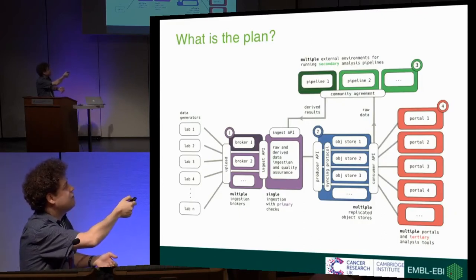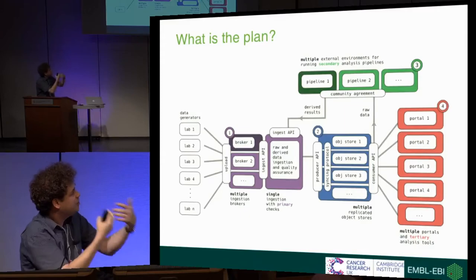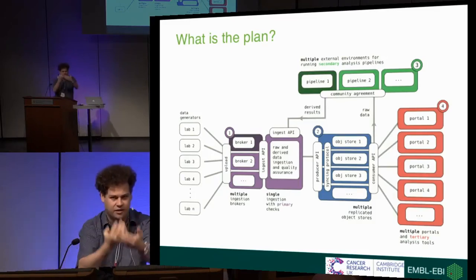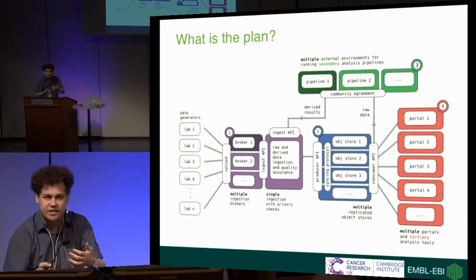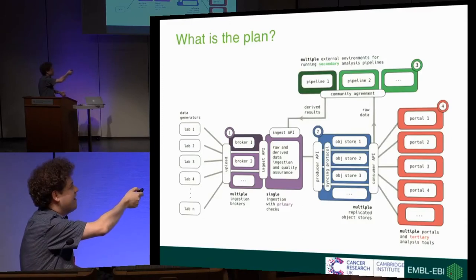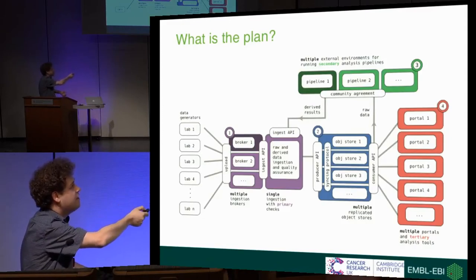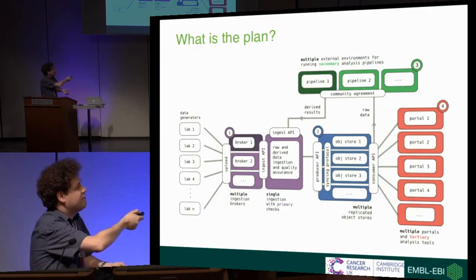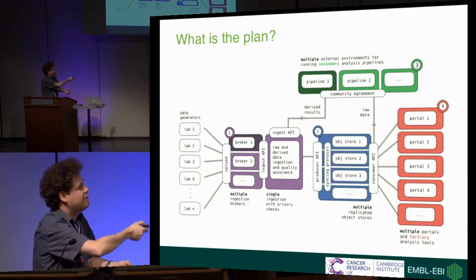From there, we have the raw data. Focusing on the green boxes at the top, the data will be processed by different pipelines. These pipelines will be community-developed, motivated by hackathons. For example, with single-cell RNA sequencing, the alignment and generation of a gene count table and basic analyses will be performed. These derived results will then be fed via the ingest API into the object store, and then they, together with the raw data, will be shared with the entire community via the consumer API.